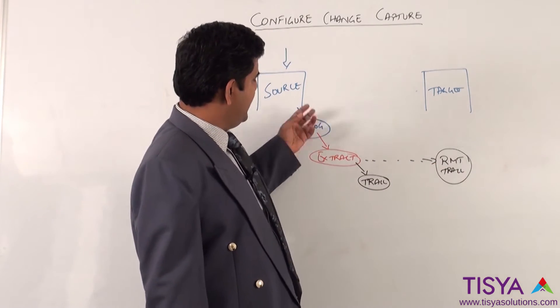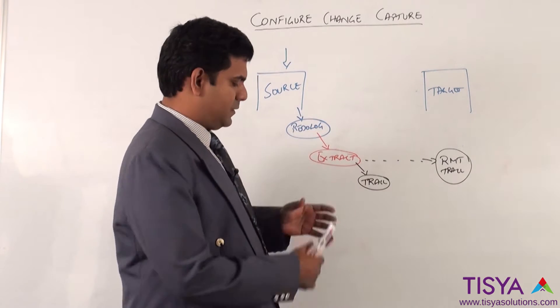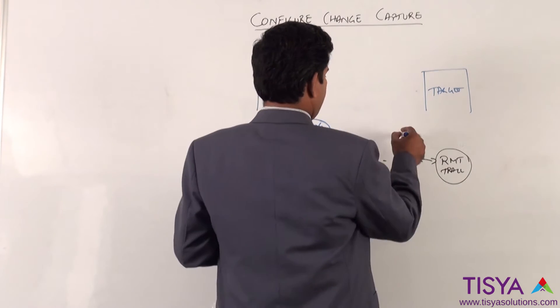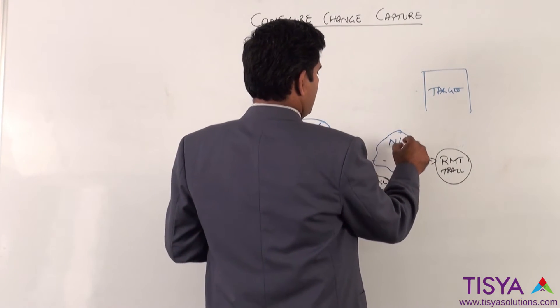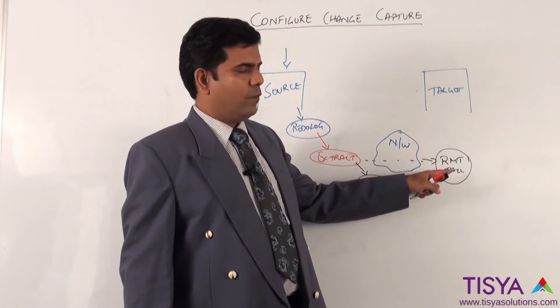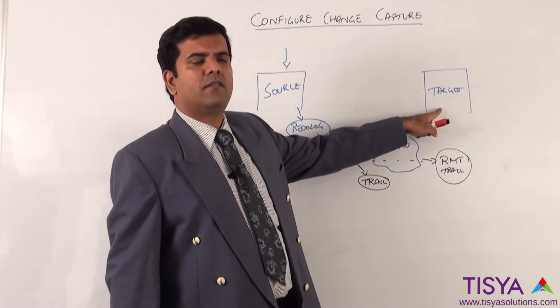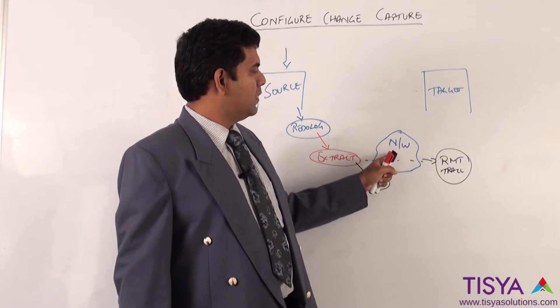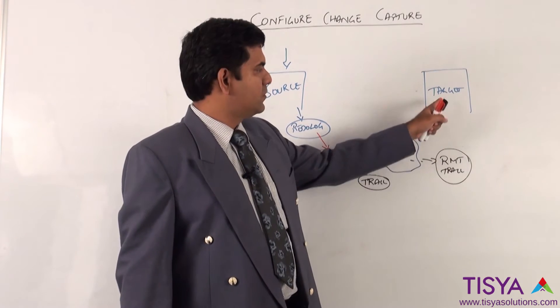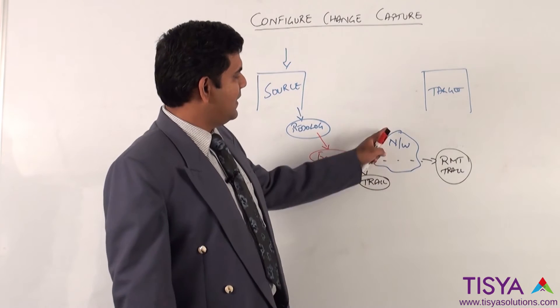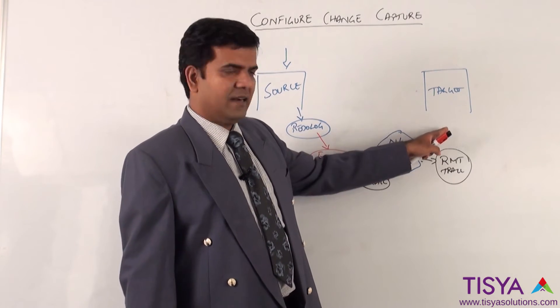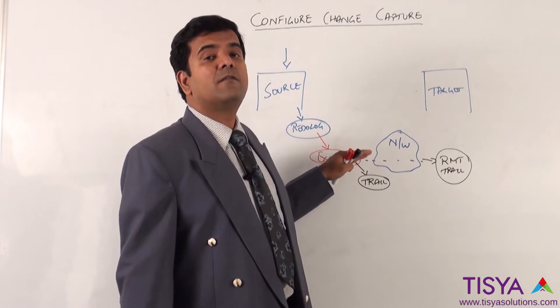When extract is reading from the redo log, it has to send the data over the network to the remote host where Golden Gate should already be running on the target. Through the network it will start a collector process on the target side and receive it. In case anything happens on the network or on the target side, the extract itself will stop.